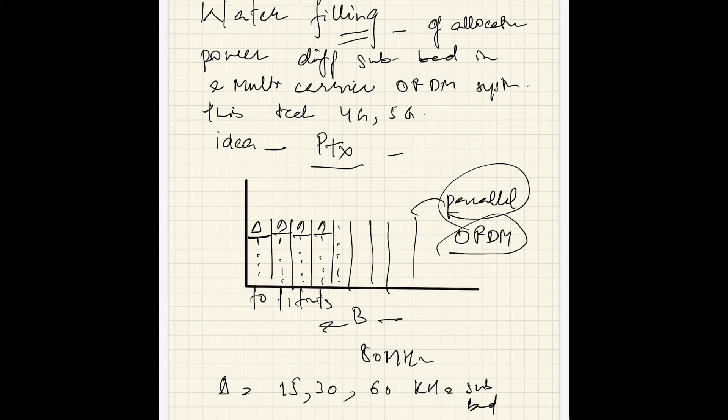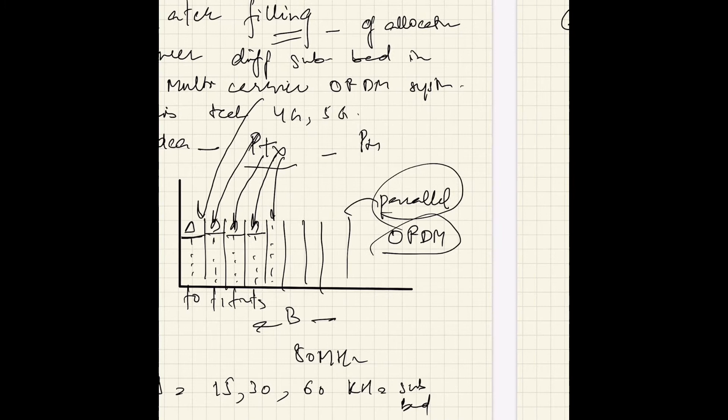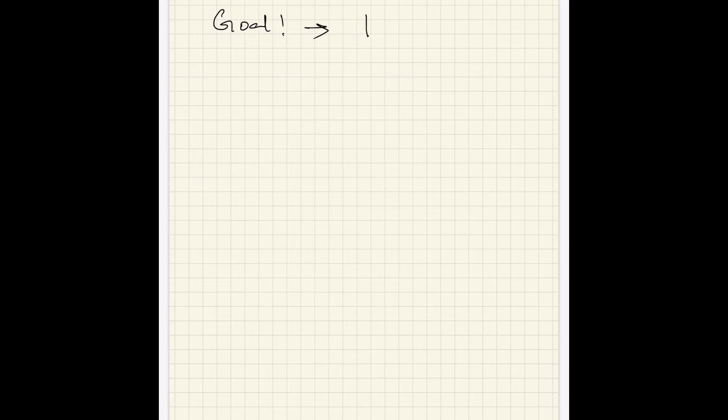Water filling tries to allocate power to these sub-bands. From PTX we are allocating power to these sub-bands. So what is the goal behind this allocation? We need to allocate some power to transmit something — the transmitter needs some amount of power. Here we are independently transmitting constellations or data signals on different sub-bands, so the goal is to maximize the bitrate.